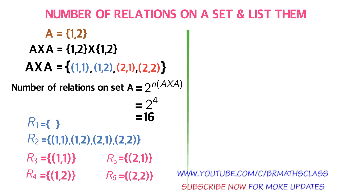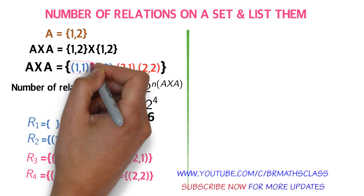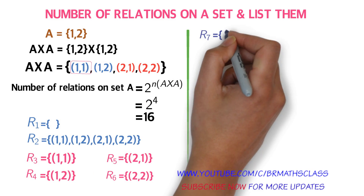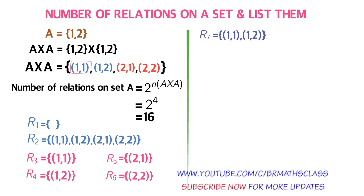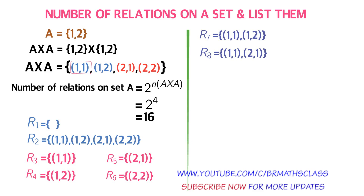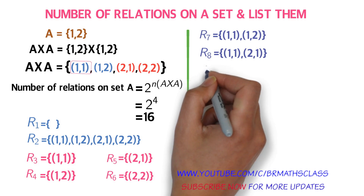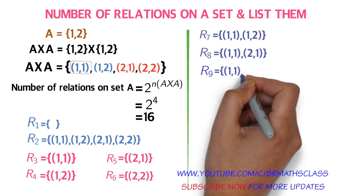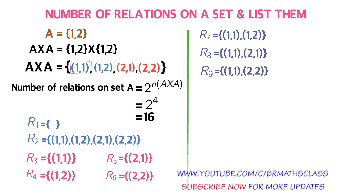R7 is taken as ordered pair (1,1) and the immediate next ordered pair (1,2). R8: take ordered pair (1,1) and move to the right — (1,2) is already taken — so the next is ordered pair (2,1). R9: take ordered pair (1,1), move right past (1,2) and (2,1) already taken, what remains is (2,2). So R9 is {(1,1), (2,2)}. You observe that R7, R8, R9 all start with ordered pair (1,1) and pair with the next element moving right.